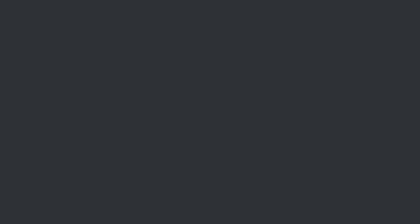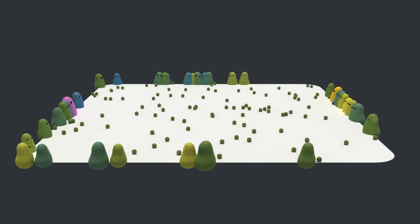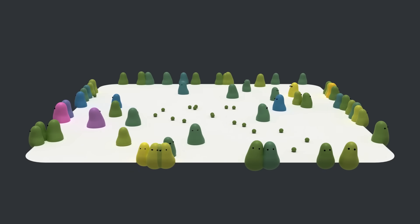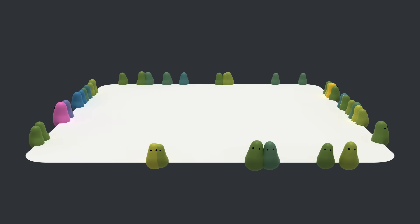So in this video, we're going to make a real evolving system by putting our blob creatures into a simple environment and giving them traits. Let's see what we can learn by watching some actual natural selection happen.